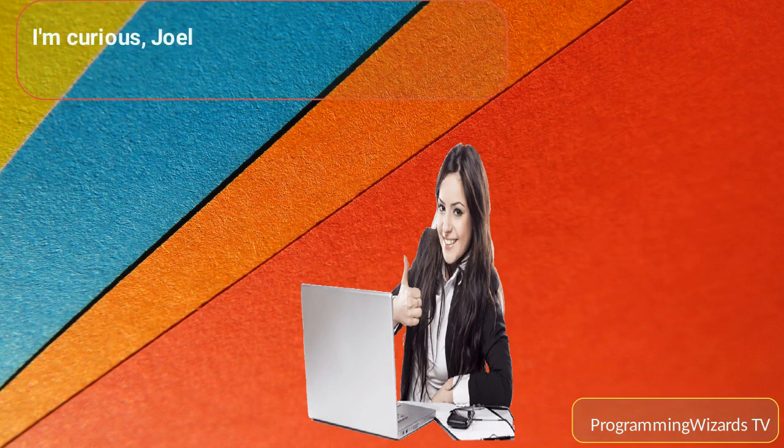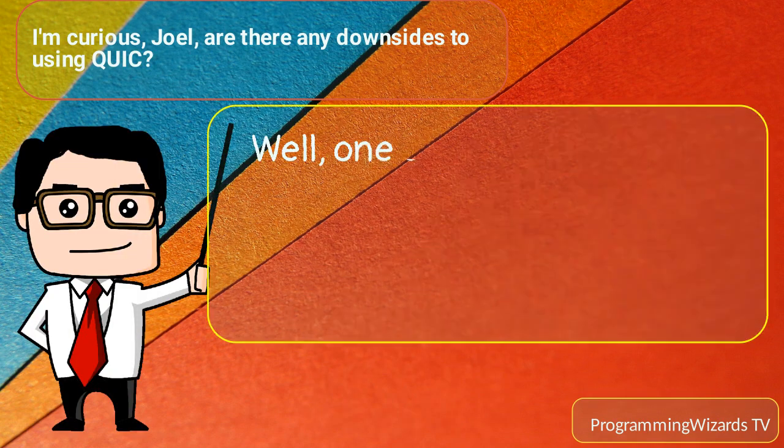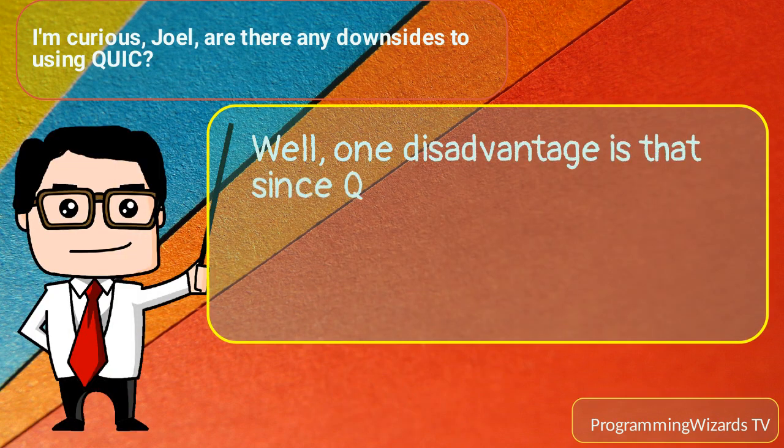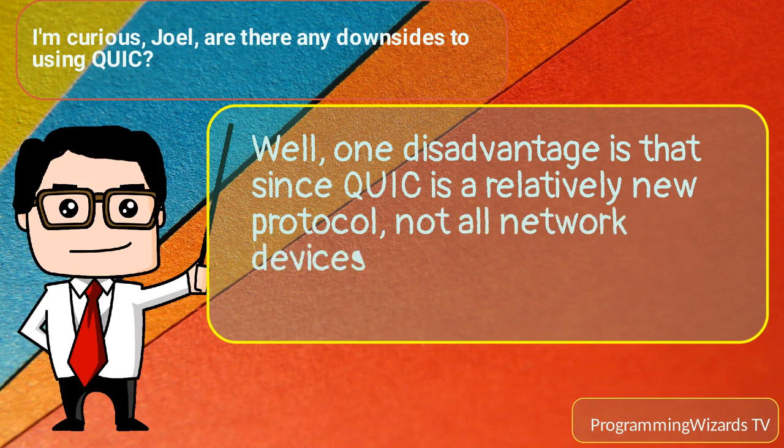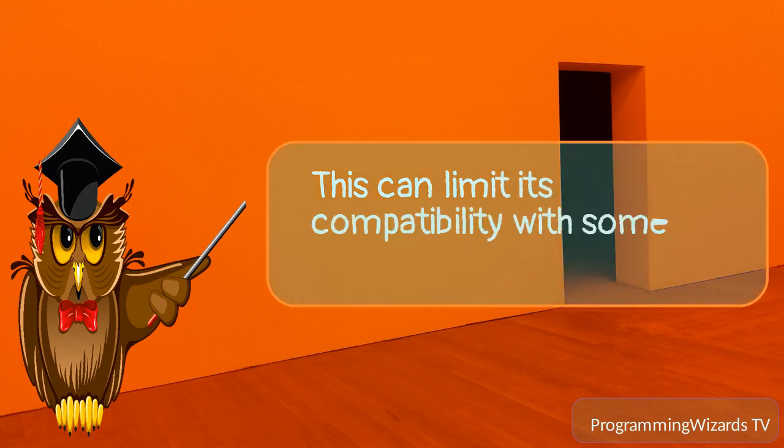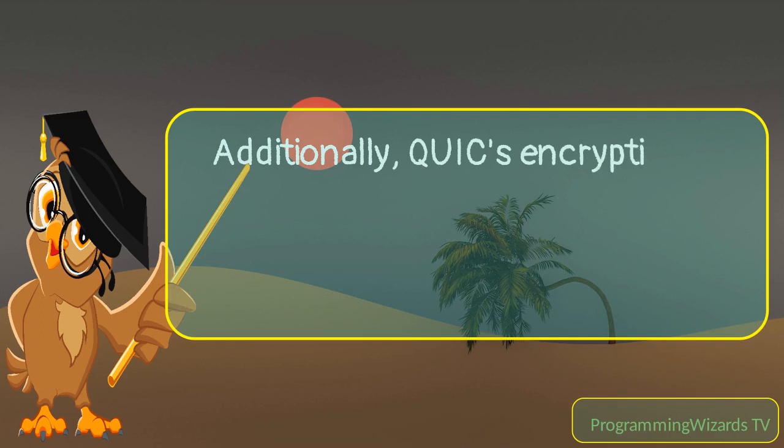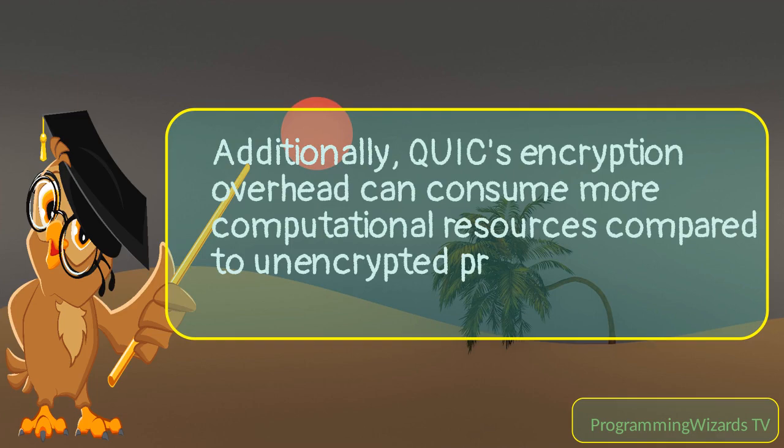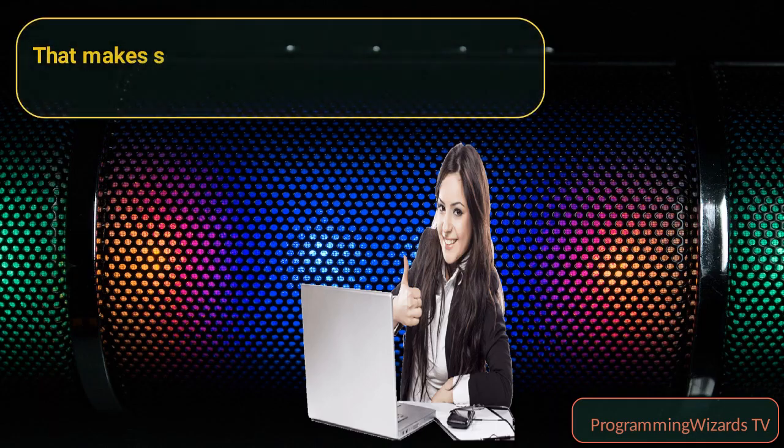I'm curious, Joel, are there any downsides to using QUIC? Well, one disadvantage is that since QUIC is a relatively new protocol, not all network devices and servers may support it yet. This can limit its compatibility with some older systems. Additionally, QUIC's encryption overhead can consume more computational resources compared to unencrypted protocols like UDP.